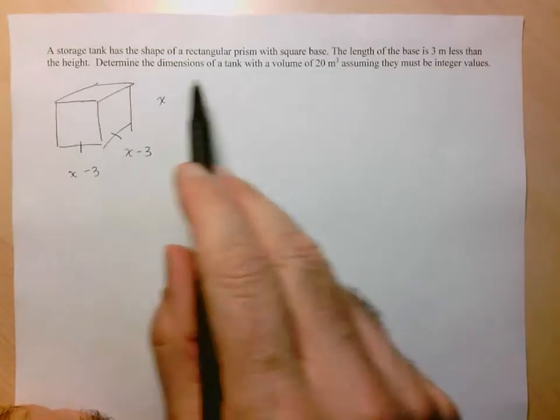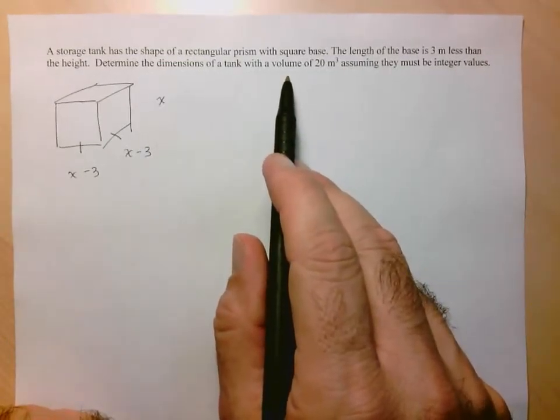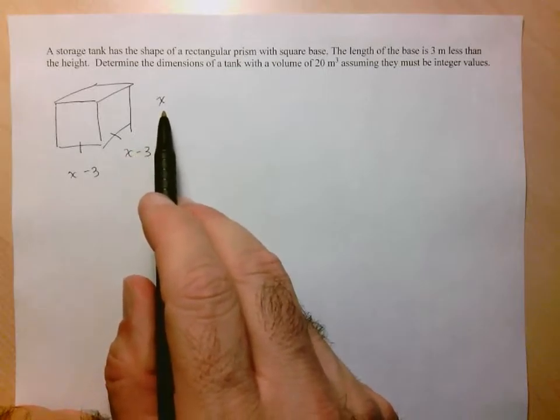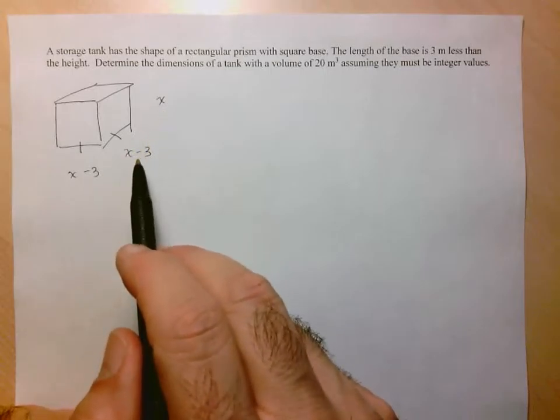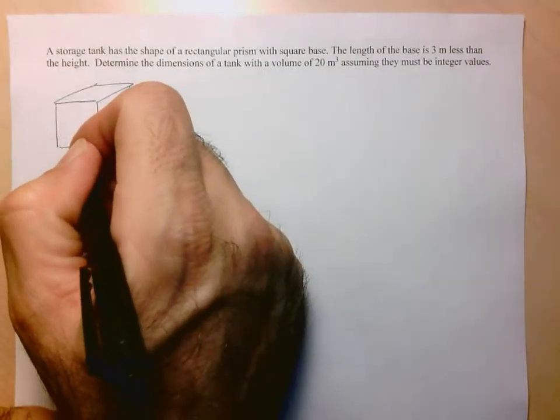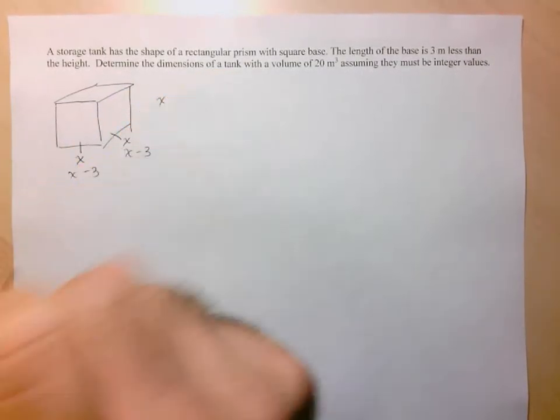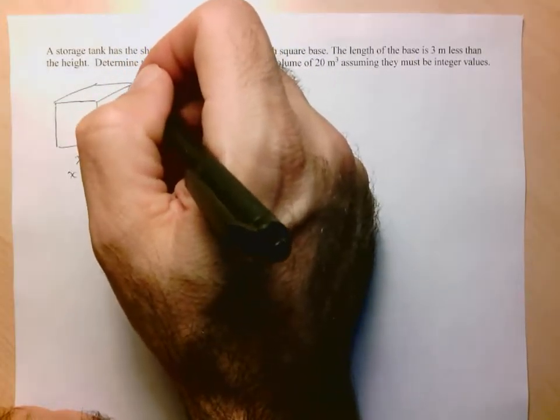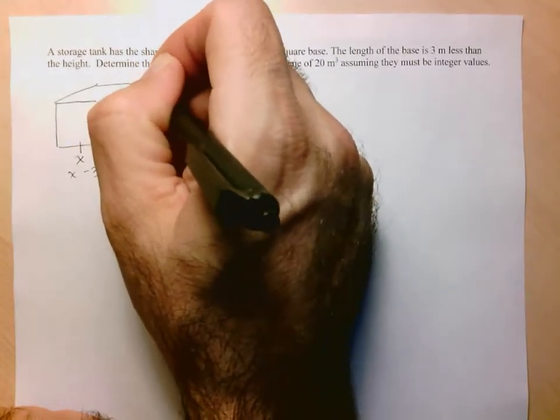But I notice here that they're asking me to work with the volume, so I know I'm going to have to multiply these three terms. I would get the correct answer perfectly well if I use these, but I'd rather call my side lengths x.